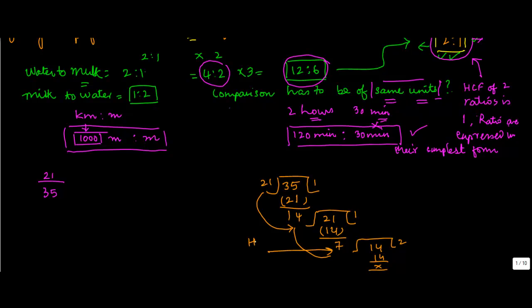So the HCF of these two numbers is 7, hence we conclude that this is not a ratio in the simplest form. So what do we do? We divide both the numbers, both the numerators and the denominators by 7. 21 divided by 7 is 3, 35 divided by 7 is 5.